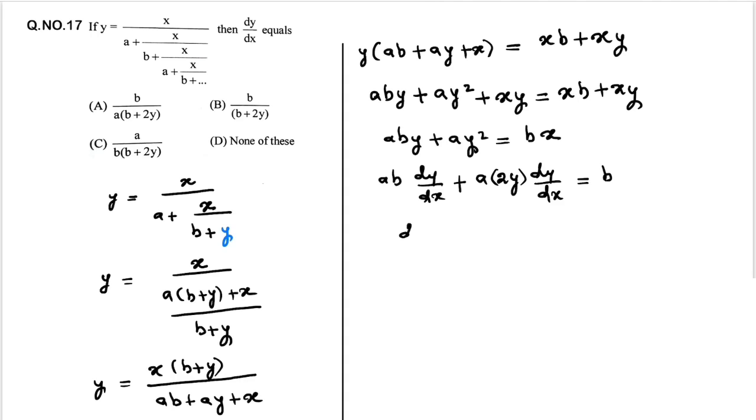So if you take dy/dx in common then you will get ab plus 2ay equals b. Therefore dy/dx equals b divided by (ab plus 2ay).